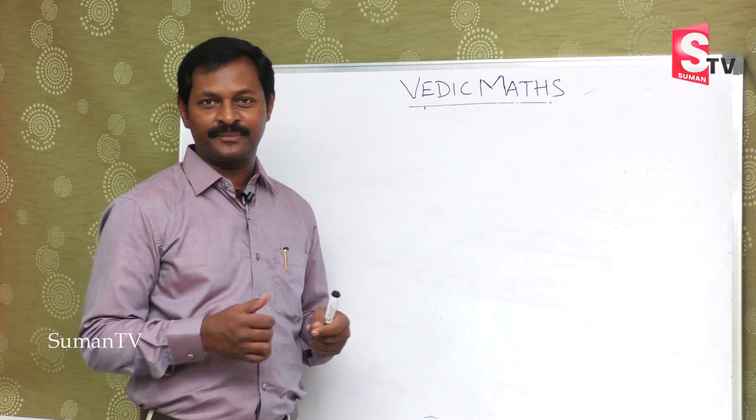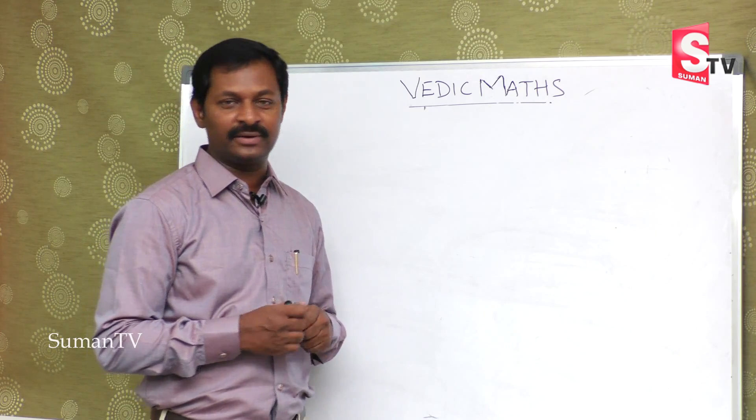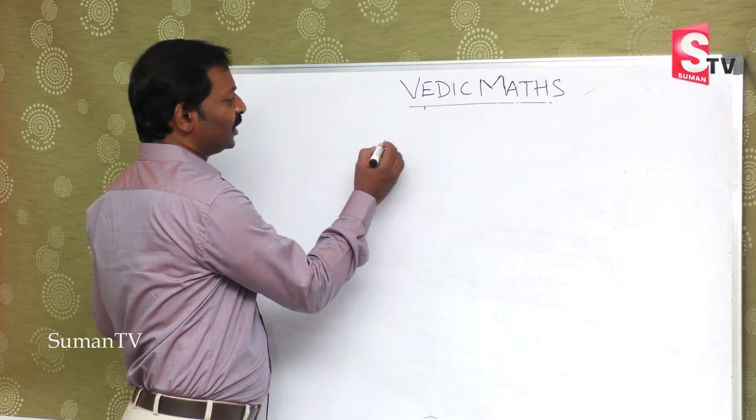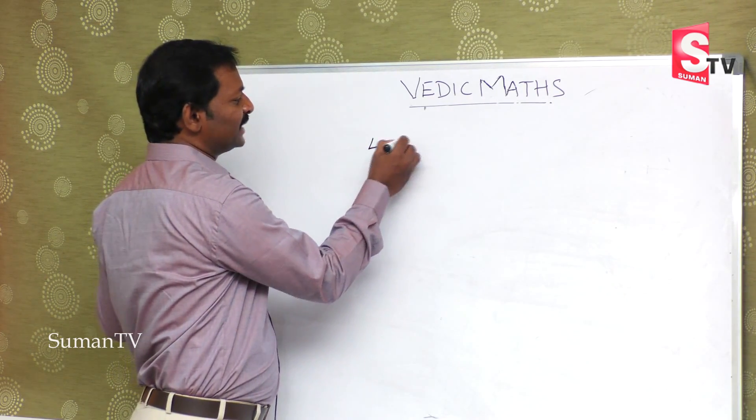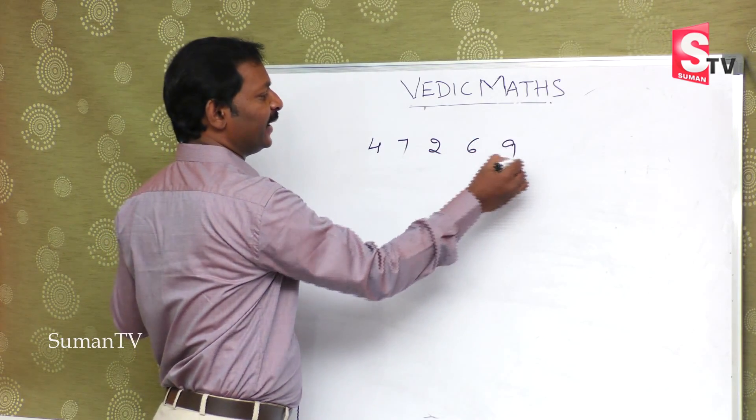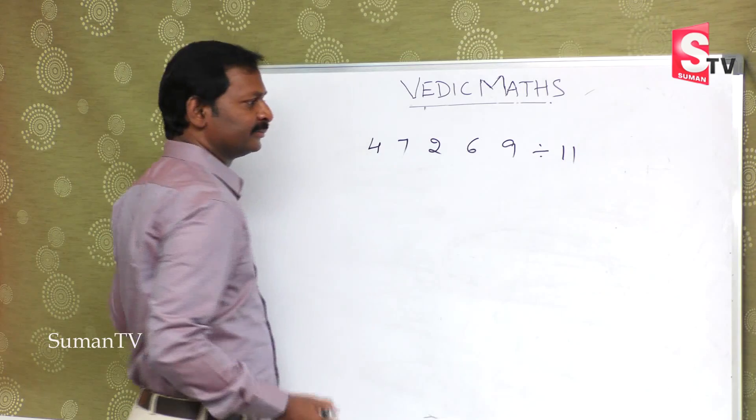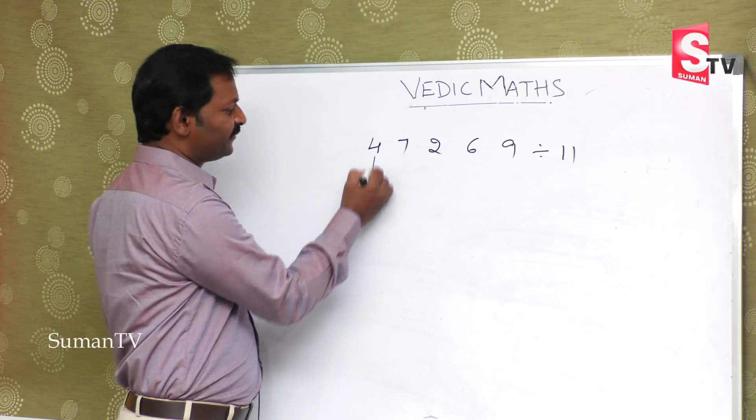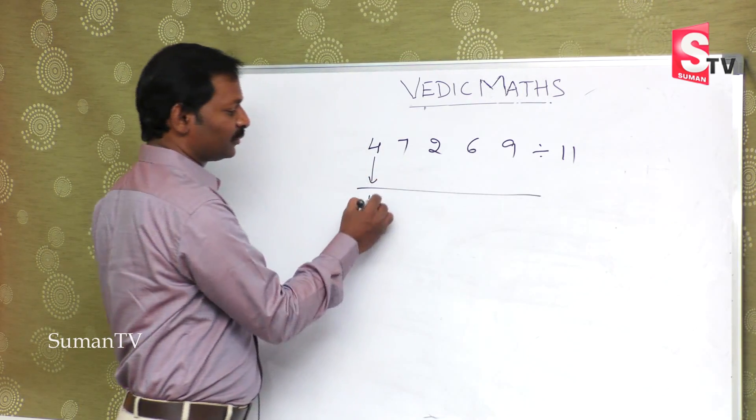Now we will change division by 11. Suppose we have 47269 divided by 11. Here's a little change: first number will bring down, that is 4.